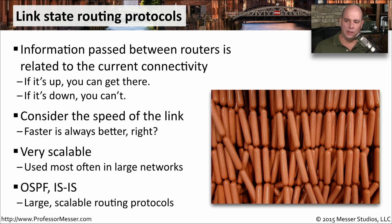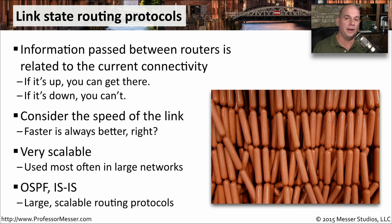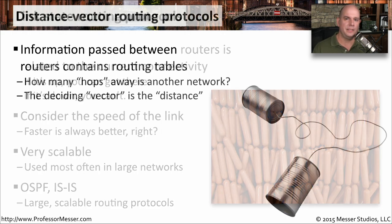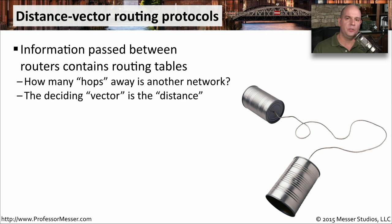A common example of a link state routing protocol might be OSPF or ISIS. OSPF is used inside many organizations, while ISIS is found in very large provider networks. So if you're wondering what to use for a very large network and need a scalable routing protocol, you might want to concentrate on one of those dynamic routing protocols.